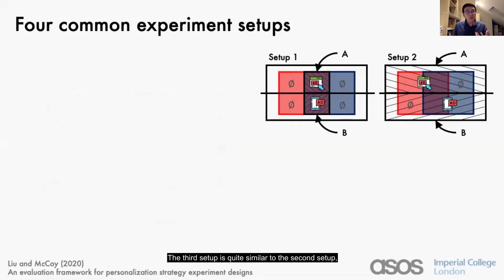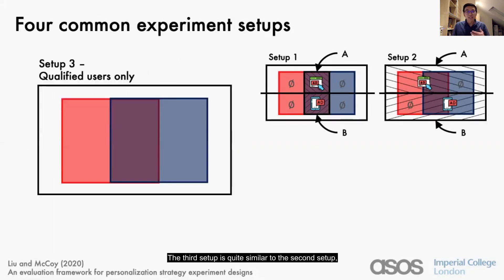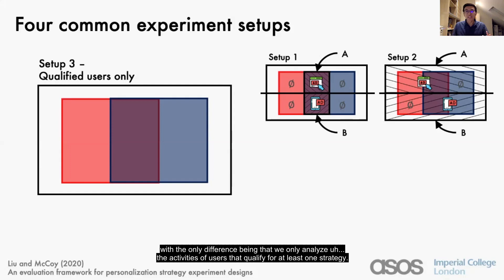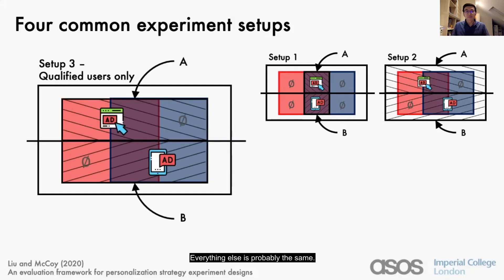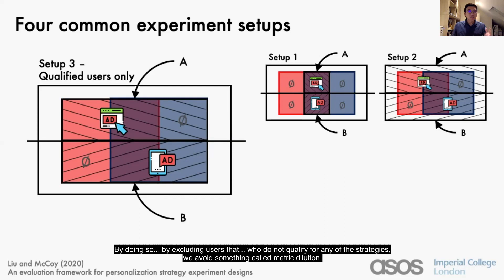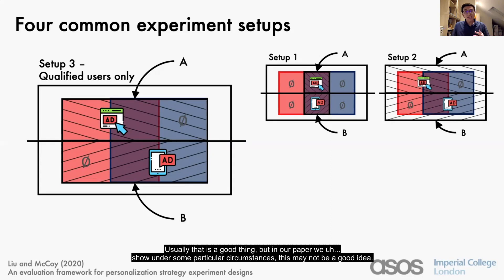The third setup is quite similar to the second, with the only difference being that we only analyze the activities of users who qualify for at least one strategy. By excluding users who do not qualify for any of the strategies, we're avoiding something called metric dilution. Usually that is a good thing, but in our paper we show that under some particular circumstances, this may not be a good idea.